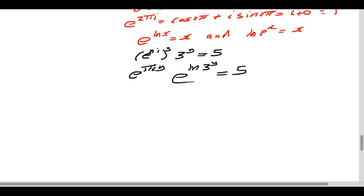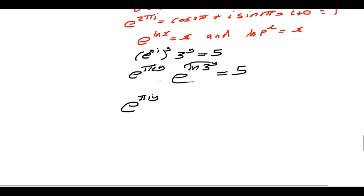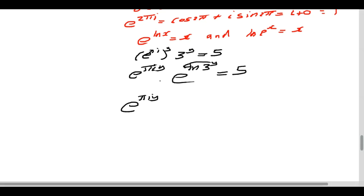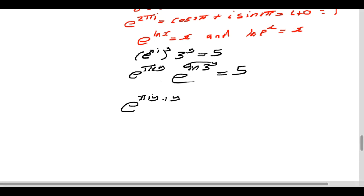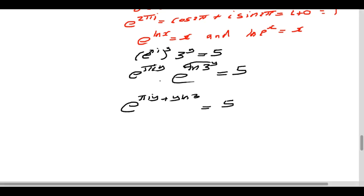Using the laws of indices — same base with multiplication means we add the powers — we combine to get e^(πiy + y·ln 3) = 5. From the laws of logarithms, the power y becomes the coefficient, giving us the exponent as πiy plus y·ln 3.